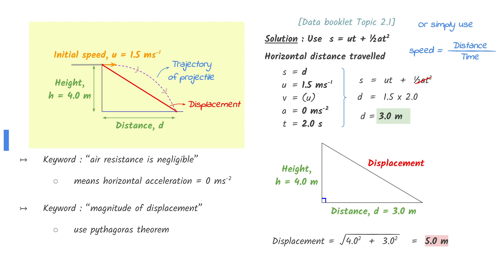Use Pythagoras' theorem to find the displacement. You may have also noticed that this is a 3-4-5 triangle.